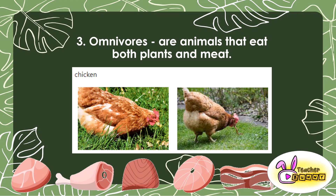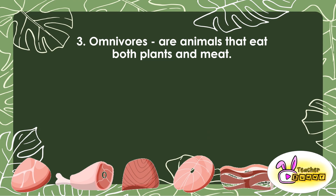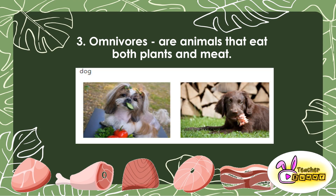Next is chicken — as you can see, this chicken is eating plants and also earthworm. Dogs are also omnivores; they can eat plants and meat.